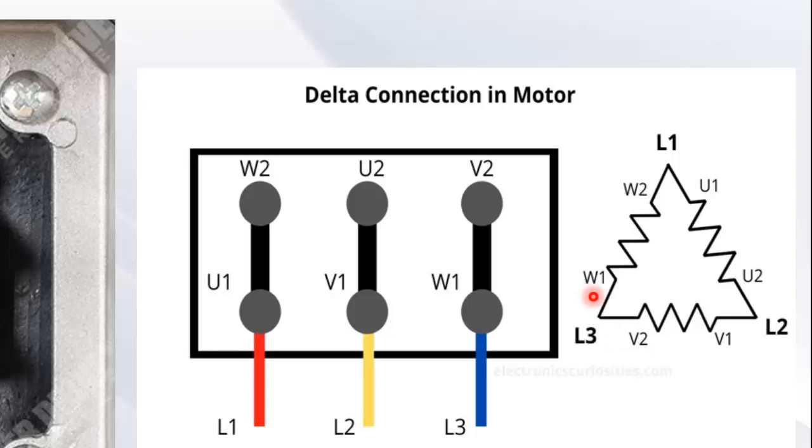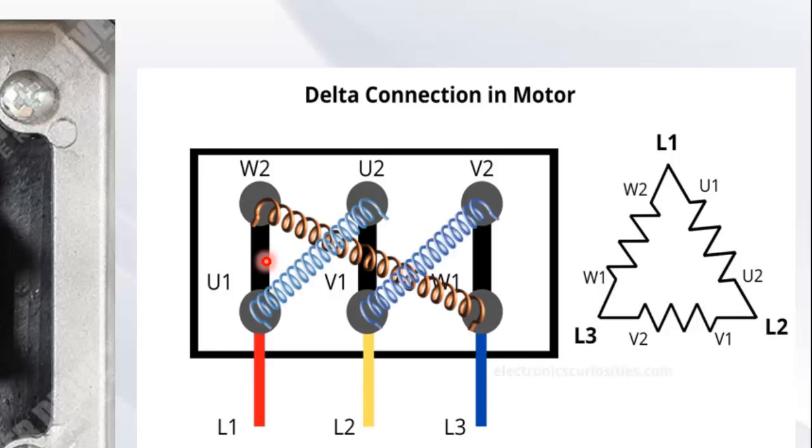Let's add windings in between six terminals of motor. One set of winding is U1, U2. Second winding is V1, V2. And third winding is W1, W2.